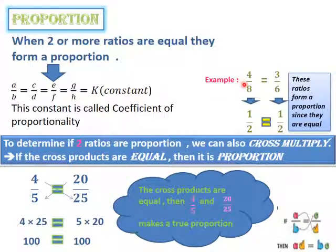For example, we have two ratios, 4 over 8 and 3 over 6. We are going to check if they are proportion. We simplify the first ratio, 4 over 8, into half, and the second ratio, 3 over 6, into half. Then these ratios form a proportion since they are equal.